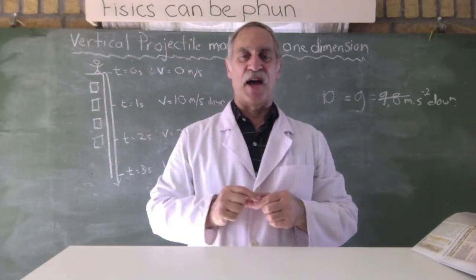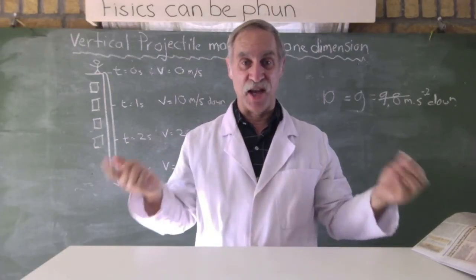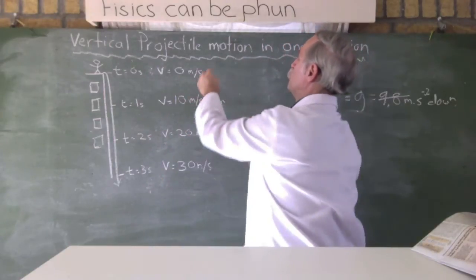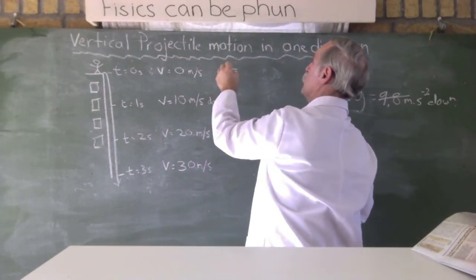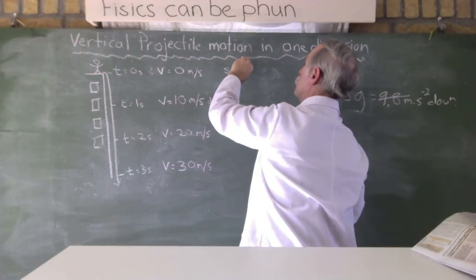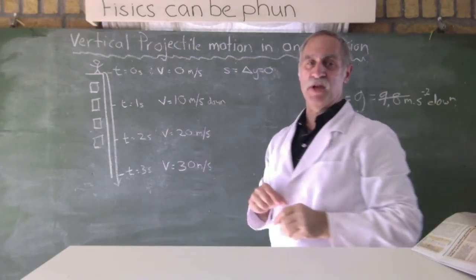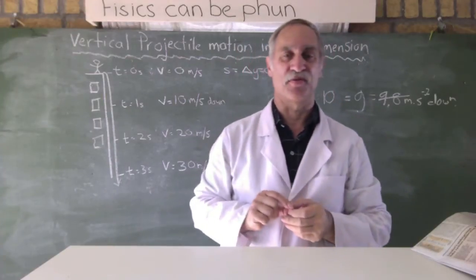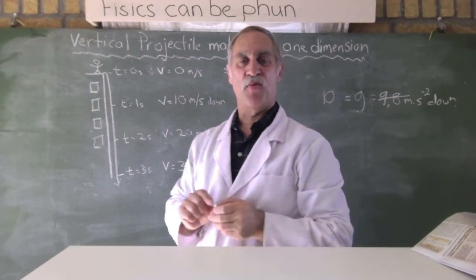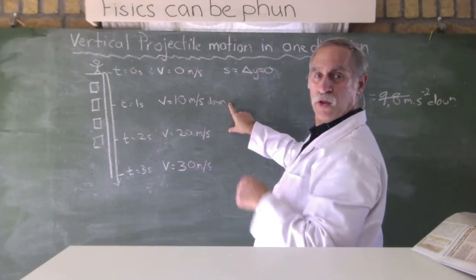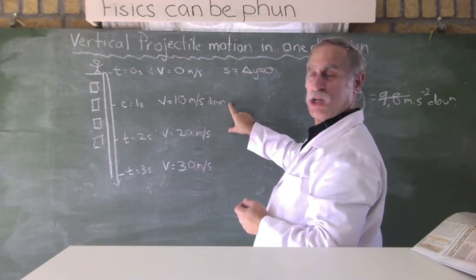Now, let's work out the displacement. How does that change over time? Well, at time equals naught, its displacement, or delta y, is going to be equal to zero meters. It hasn't yet started to move. But what would its displacement be after one second? Well, think about it. Let's see if we can work it out logically.